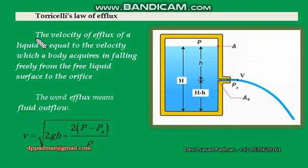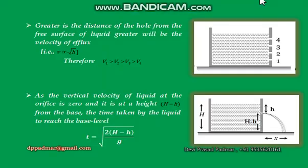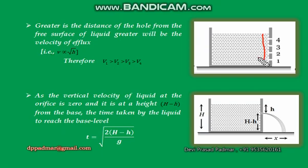That is what the statement of Torricelli's law explains: the velocity of efflux of a liquid is equal to the velocity which a body acquires in falling freely from the free liquid surface to the orifice. From the expression of velocity of efflux, it is clear that velocity of efflux is directly proportional to root h — that is, to the distance of the orifice from the free liquid surface.